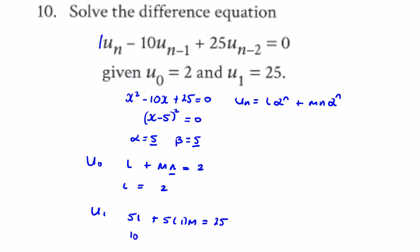So 10 + 5m = 25, which means 5m = 15, and m = 3.